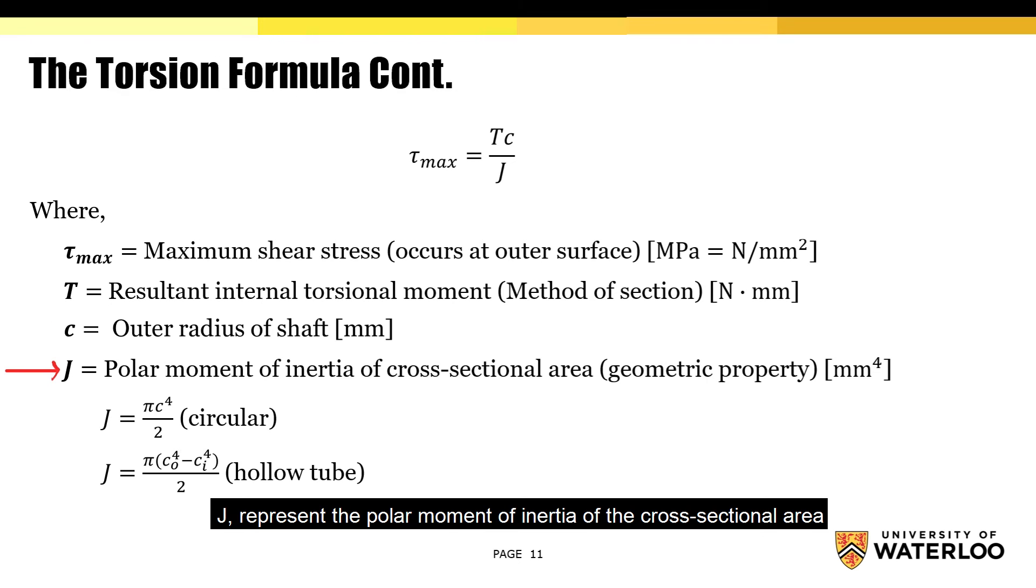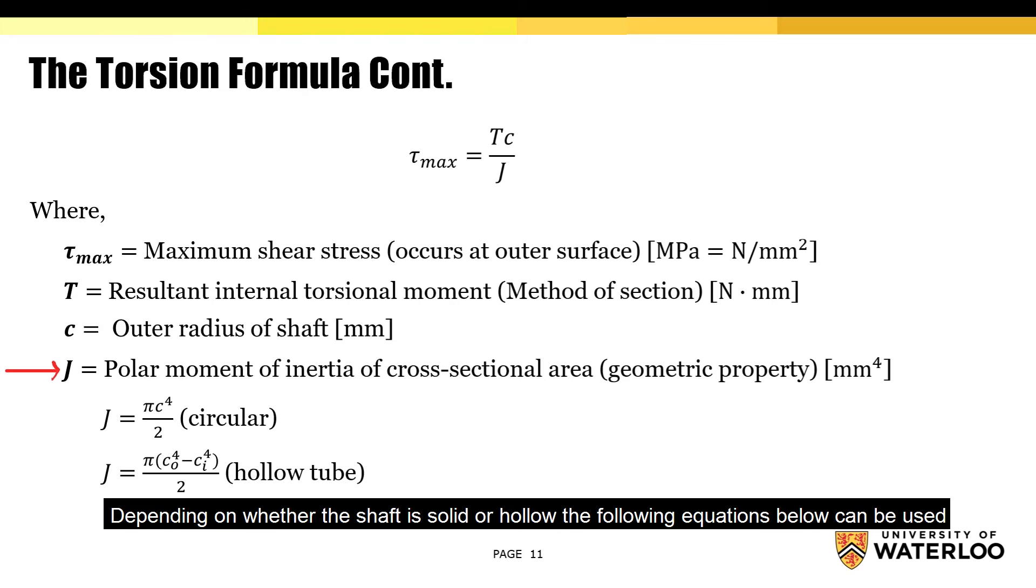J represents the polar moment of inertia of the cross-sectional area. This variable is purely dependent on the geometry of the shaft. The unit for J is millimeters to the power of 4. Depending on whether the shaft is solid or hollow, the following equation can be used.